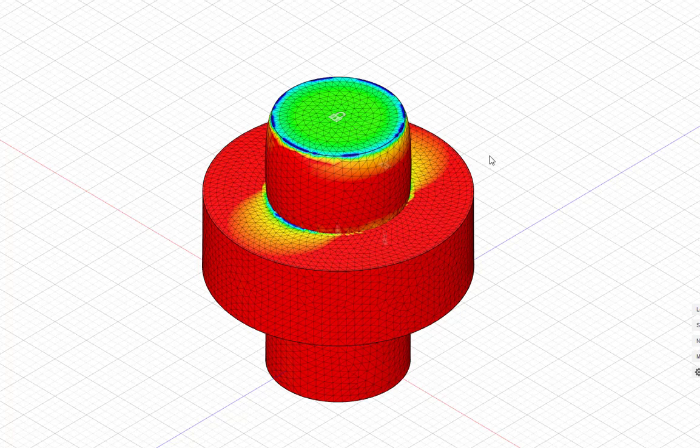I did this because there's no simple way in Fusion 360 FEA to represent shrink fit stresses. So I put an aluminum shaft, perfect fit, inside a steel collar.